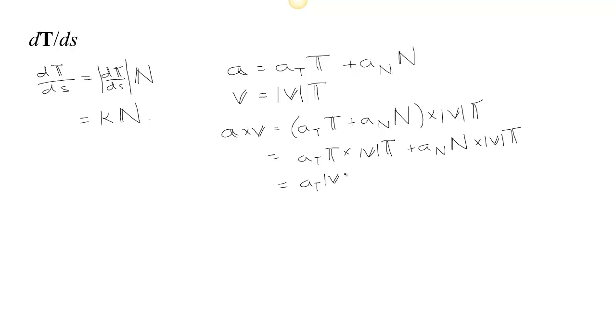And when you have a scalar, those scalars come through with the cross product, so we get T cross T. This is a scalar, that's a scalar, so those come through. So we have a sub n, a sub n v, a sub n speed, because it's the length of v, N cross T.